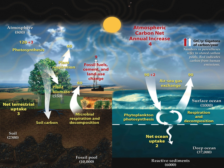It describes the movement of carbon as it is recycled and reused throughout the biosphere, as well as long-term processes of carbon sequestration to and release from carbon sinks. The carbon cycle was discovered by Joseph Priestley and Antoine Lavoisier, and popularized by Humphrey Davy.